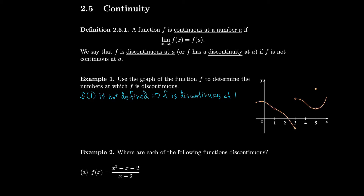It looks like we have another potential problem at x=3. Even though the function is defined at 3, the limit from the left equals the value of the function but the limit from the right does not. So the limit at 3 does not exist. If the limit doesn't exist, it definitely can't equal the value of the function, so f is discontinuous at 3.